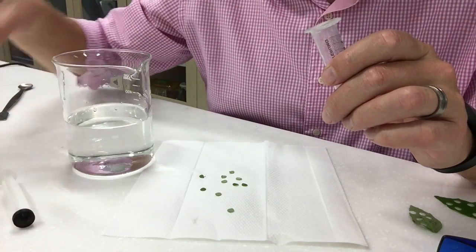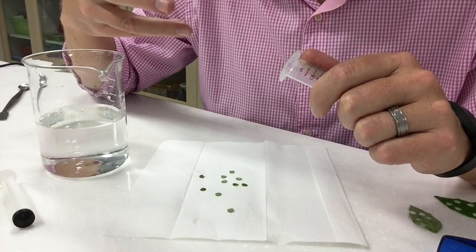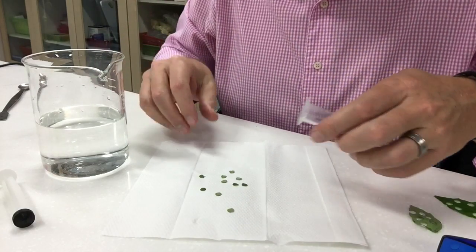The detergent is basically going to help when you evacuate the air out of the leaves that the detergent helps to get those bubbles off the leaf so that they sink a little bit better.